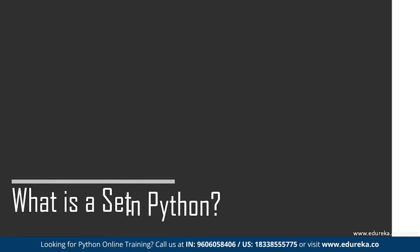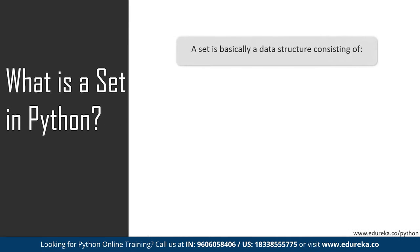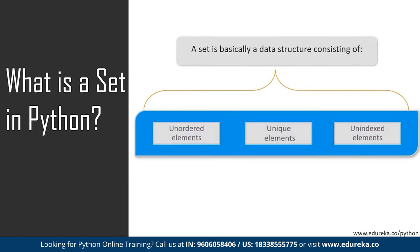Moving on to the first topic: what is a set? A set is basically a data structure which is a collection of unordered elements. All elements in a set are unique, meaning every element is present just once. These values can be of any data type, but they are not indexed, so you cannot perform indexing operations such as slicing on sets.